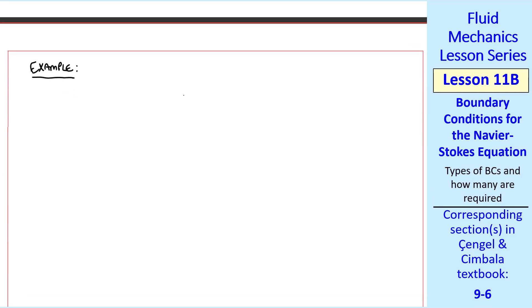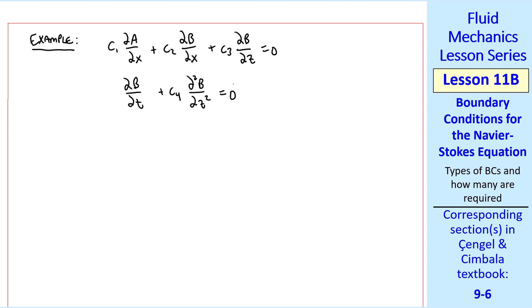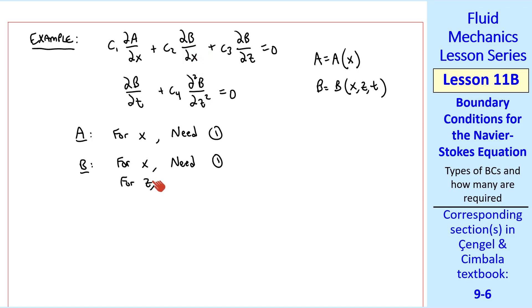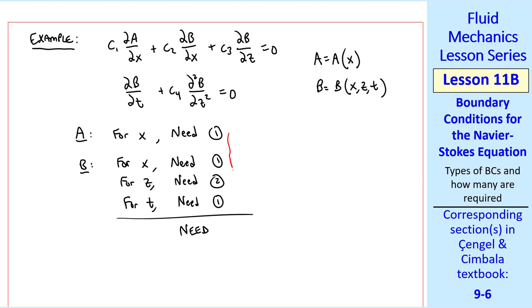I'll do a third example where I'll make up a set of two differential equations. Here we have two variables, a and b. a is a function of x, and b is a function of x, z, and t. For variable a and coordinate x, we need one, since the highest order derivative is first order. For b and coordinate x, the highest order derivative is also one, so we need one boundary condition. For z, the highest order derivative is two, since this is second order. Finally, for t, there's only one derivative of b with respect to t, which is first order, so we need one boundary condition. Adding these up, we need five total boundary conditions.